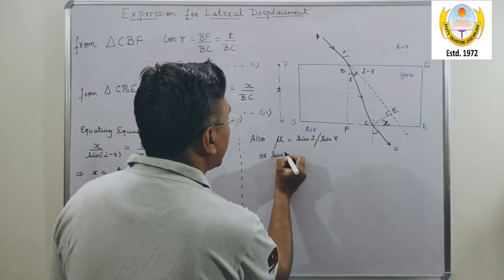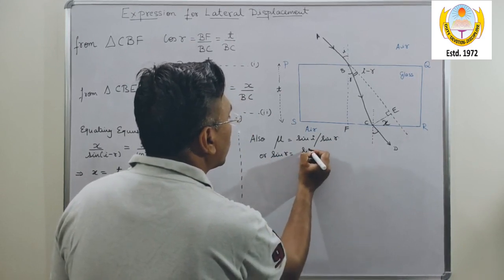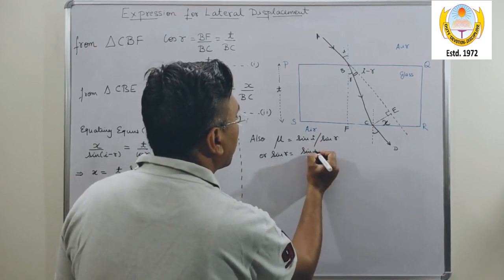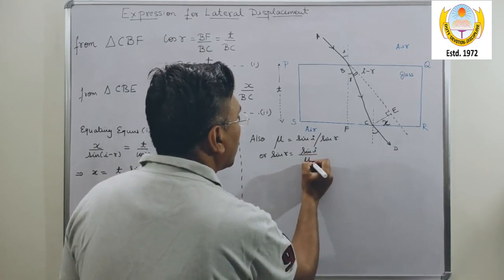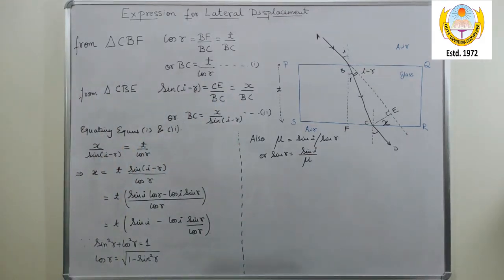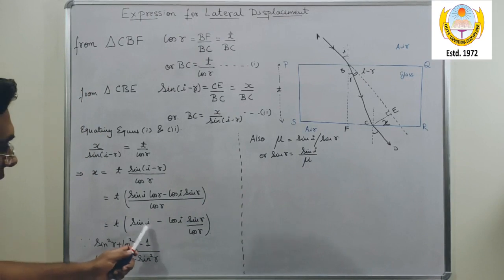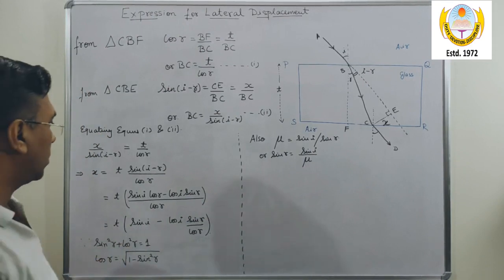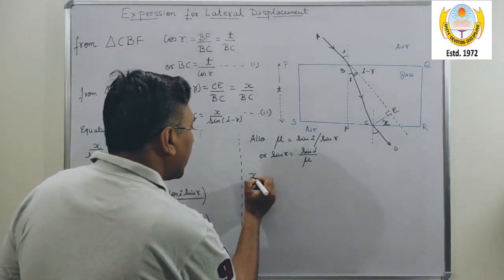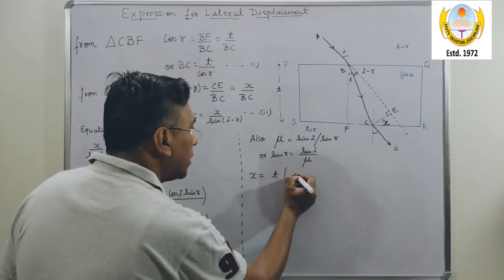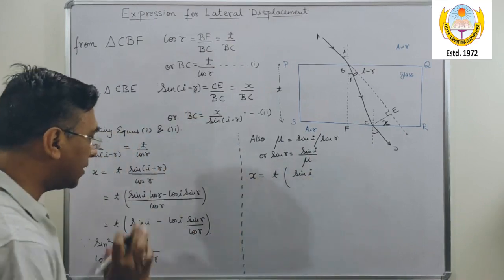Also, refractive index of glass with respect to air, which we are simply writing as mu, equals sine I upon sine R, or I can write sine R equals to sine I upon mu.